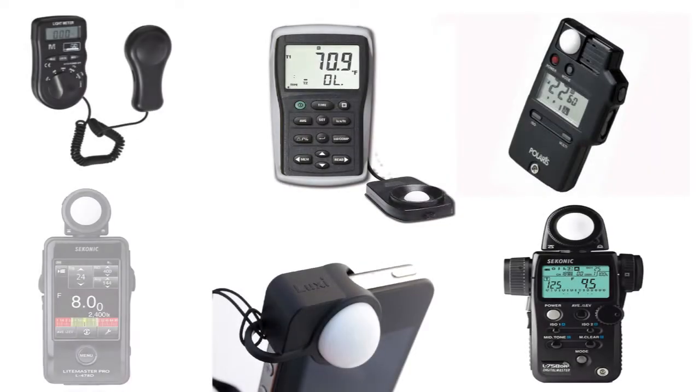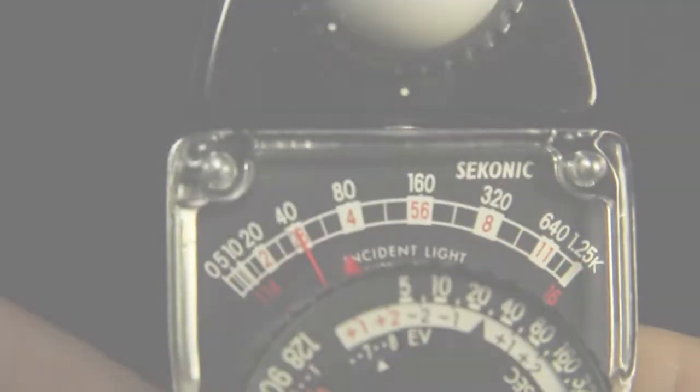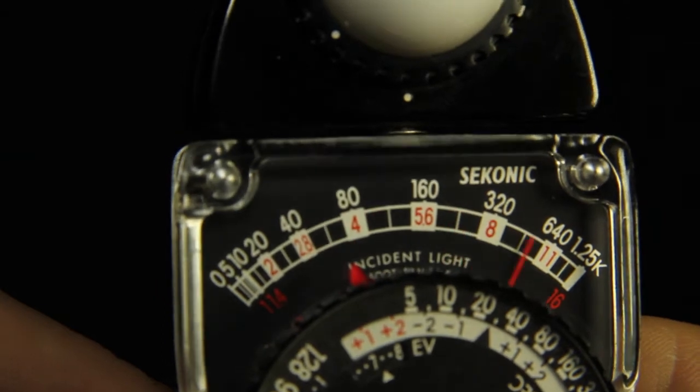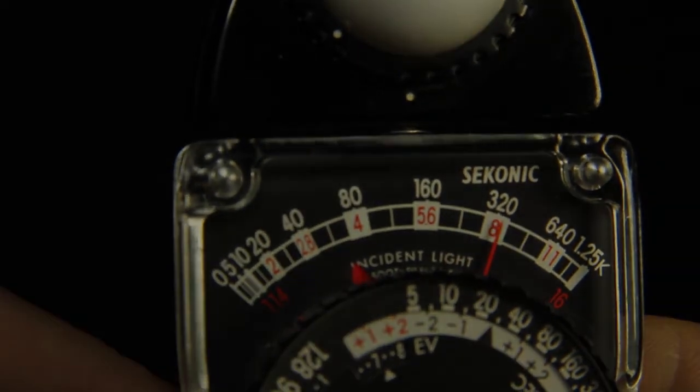There are many light meters available nowadays, but the Analog Sekonic is still a preferred quality light meter used by photographers and cinematographers around the world.